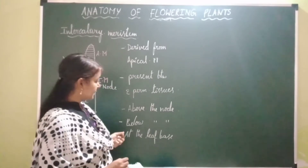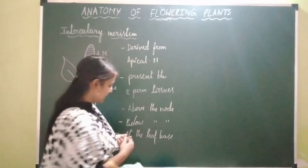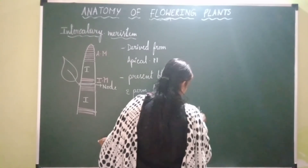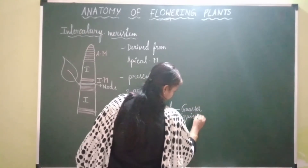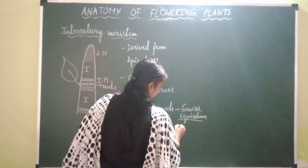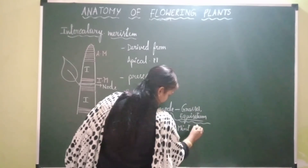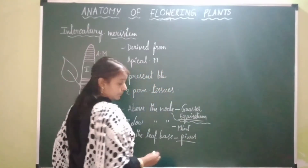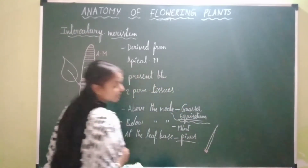Some examples of plants where intercalary meristem is present: in grasses and Equisetum (a fern), it is present above the node. In the mint plant, it is present below the node. In Pinus, which is a gymnosperm with needle-like leaves, the intercalary meristem is present at the base of the leaf.